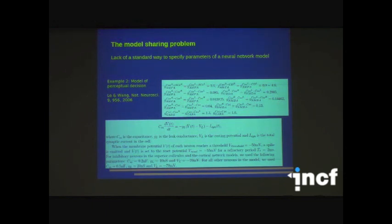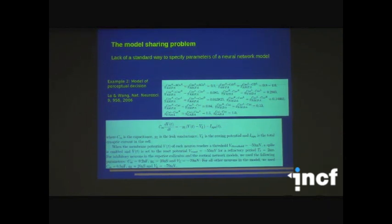And for any neural network models, there are dozens of parameters. Because there's no standard way to describe them, it's very easy to forget to mention one or two or several parameters when you write a paper. If you have experience implementing other people's models in your simulator, you will know how difficult it is, and you always end up having to email the authors to ask for those missing parameters.